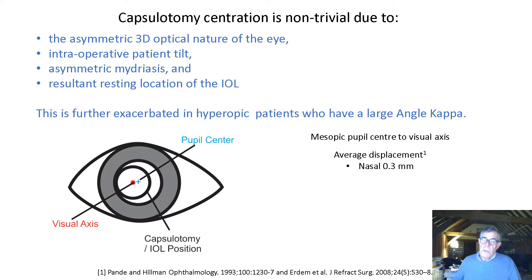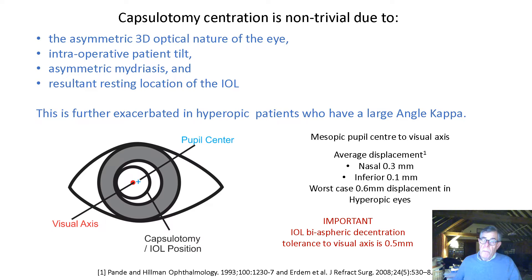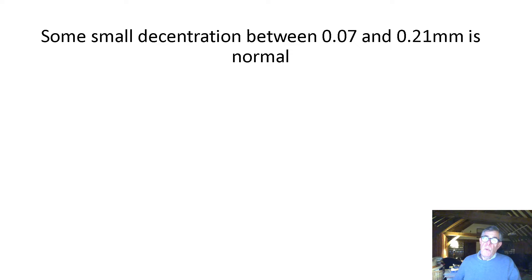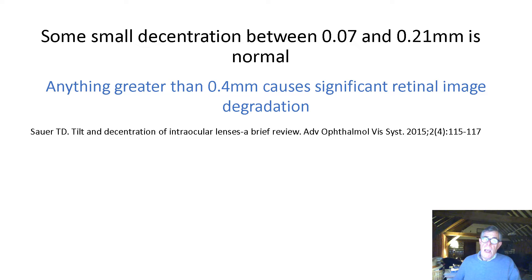Studies have shown there can be movement backwards and forwards with different sizes of the anterior capsulotomy, and this is further exacerbated in hyperopic patients where there may be a large angle kappa. If you look at the mesopic pupil and centre it to the visual axis, the average displacement is 0.3 mm nasal and 0.1 mm inferior, and in the worst-case scenario in hyperopic eyes you can get as much as 0.6 mm displacement. With an aspheric IOL, once decentration exceeds 0.3 mm, the effect of the asphericity disappears.